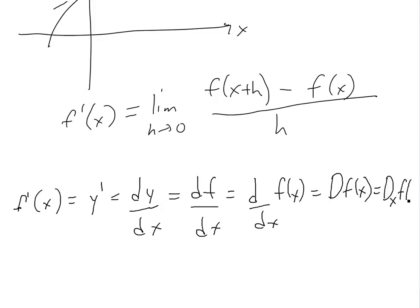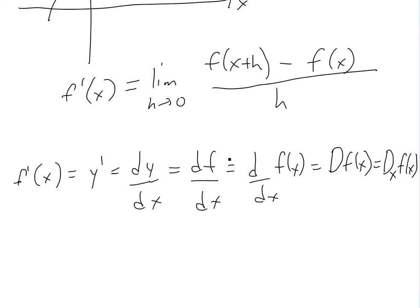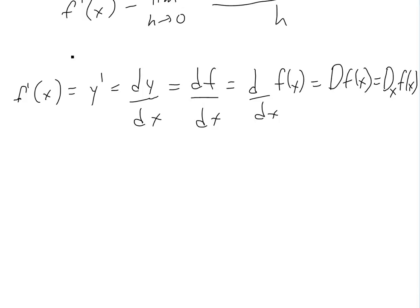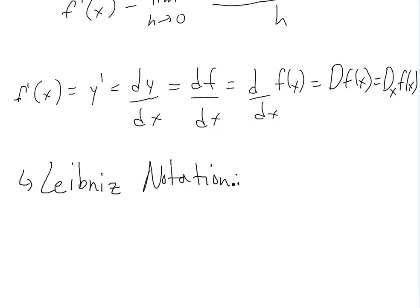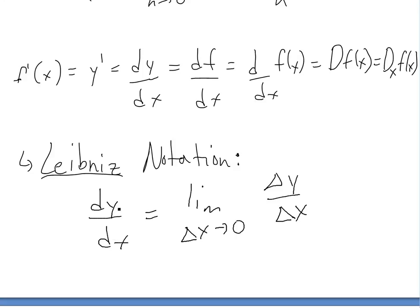These are usually called differential operators because they tell you how the derivative is being taken — this x means it's in the x direction; you could have dy or dz if you're doing three dimensions. Another notation for the definition comes from Leibniz, the guy who was first to publish a book on calculus, though Newton apparently invented it before. He writes it as dy over dx equals the limit as the change in x goes to 0 of change in y over change in x. This dy just means infinitely small, so the slope at a point is the limit as the change in x goes to 0.